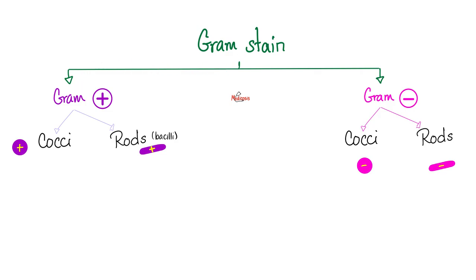If you watched the last video, you already know that gram positive are divided into gram positive cocci and gram positive rods. Gram negatives are also cocci and rods — it's either a coccus or a rod.